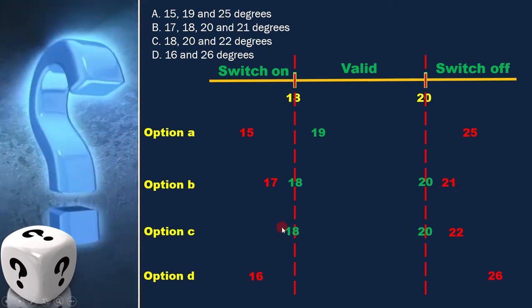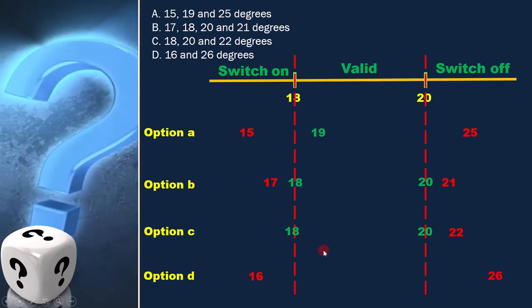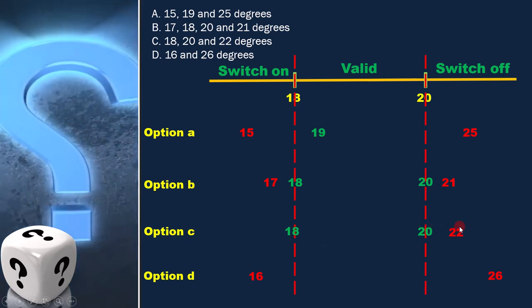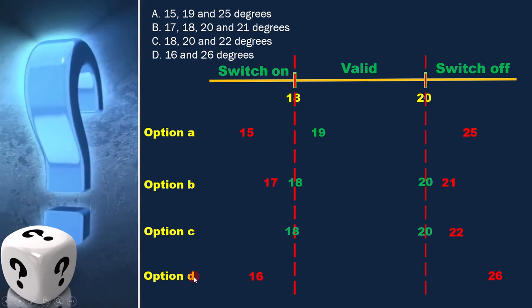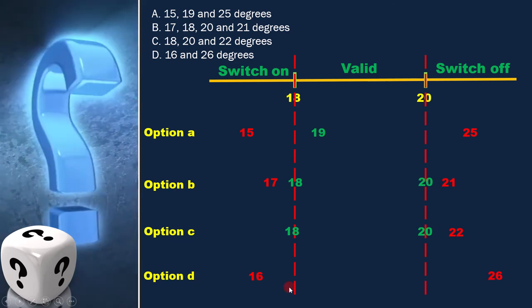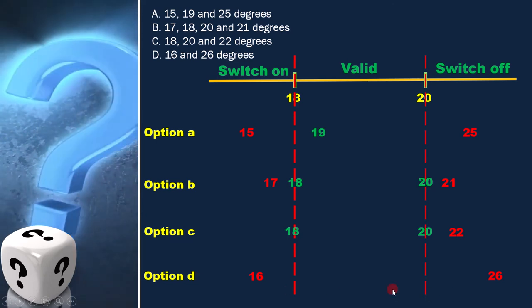In option C, 18 and 20 are in same class, and 22 is in the different class. In option D, 16 and 26 are in different classes.